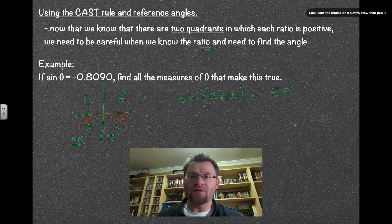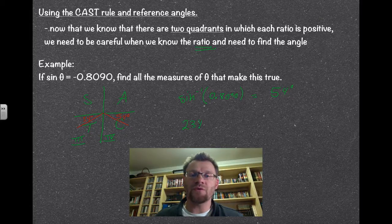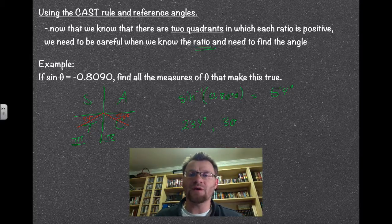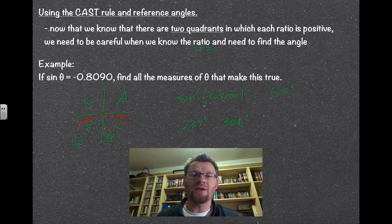Your calculator gives you the reference angle, so you have to interpret the answer. Since sine is negative in quadrants 3 and 4, both angles are 54 degrees from the x-axis in those quadrants. So one answer is 180 + 54 = 234 degrees, and the other is 360 − 54 = 306 degrees. You have to take into account the sign first, and then what ratio you're talking about, to determine which quadrant it's going to be in.